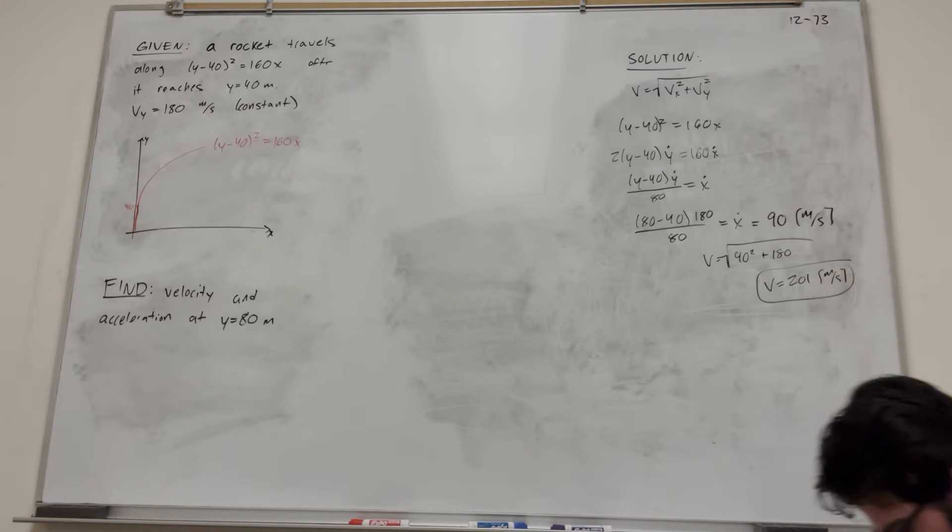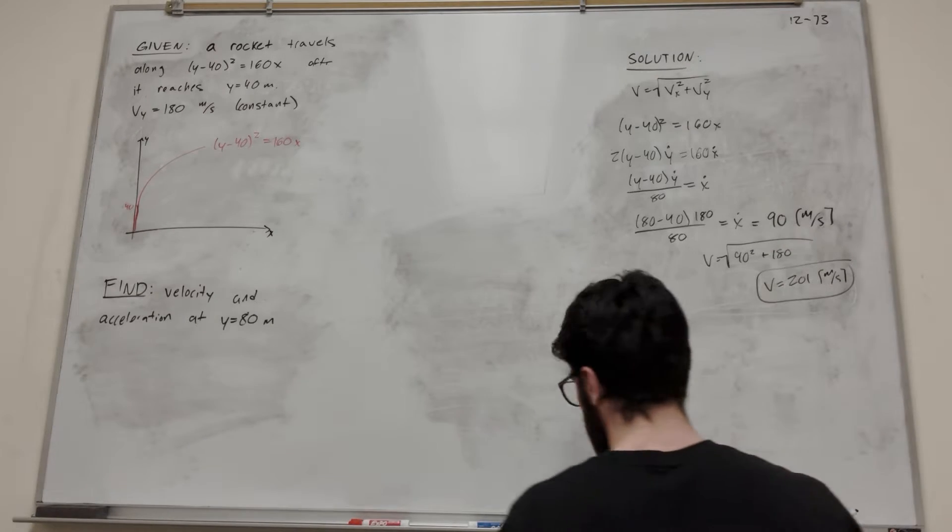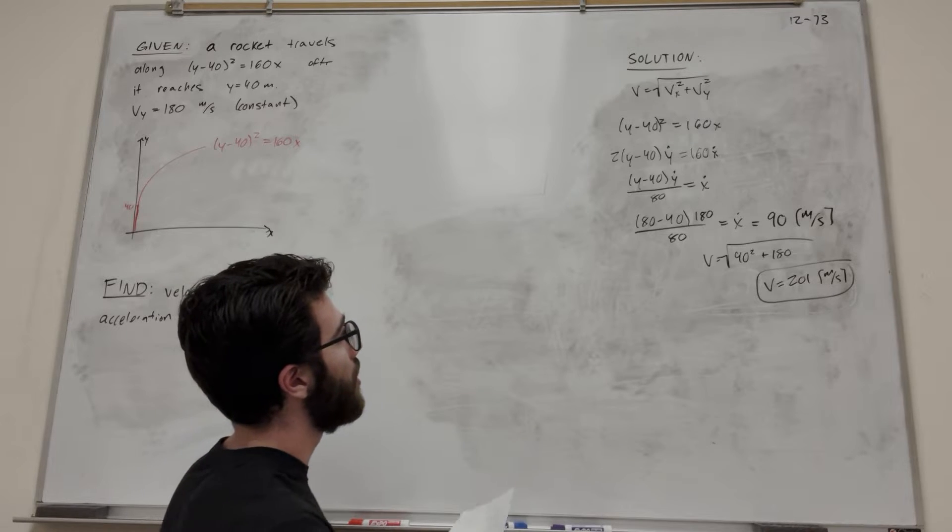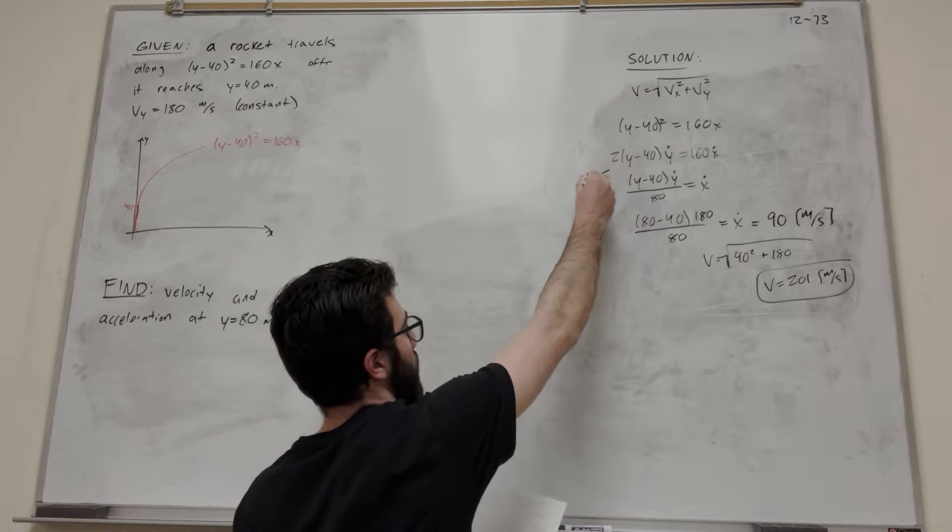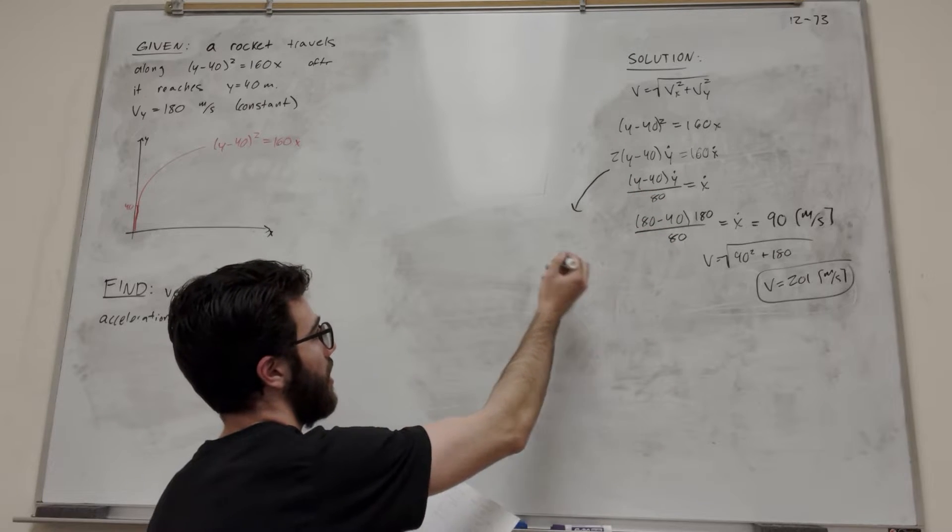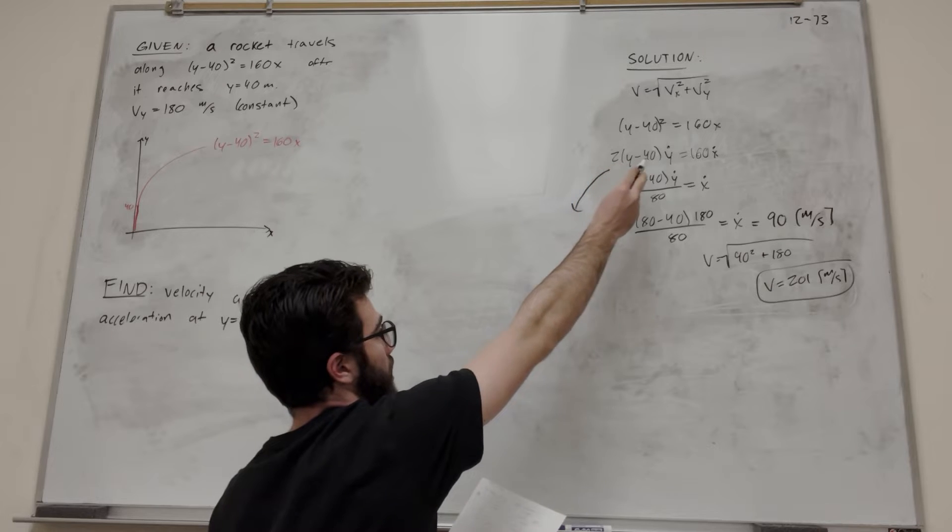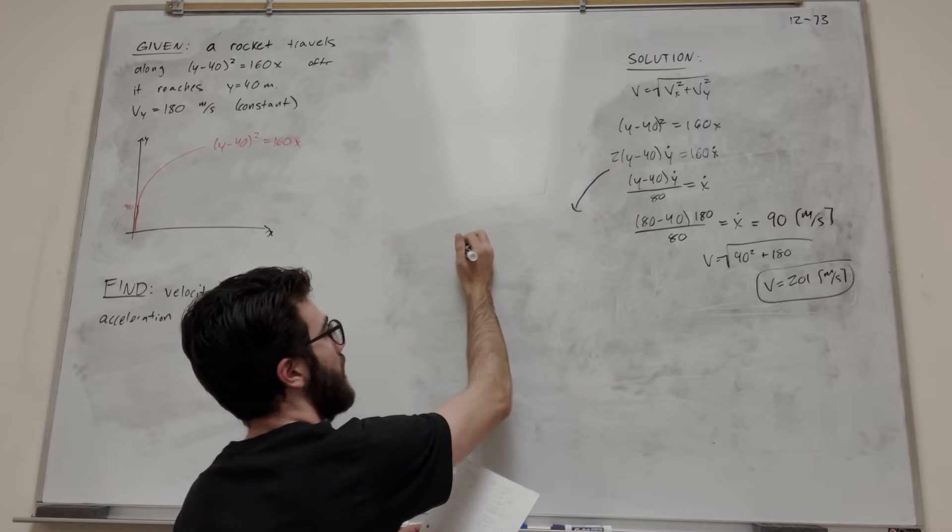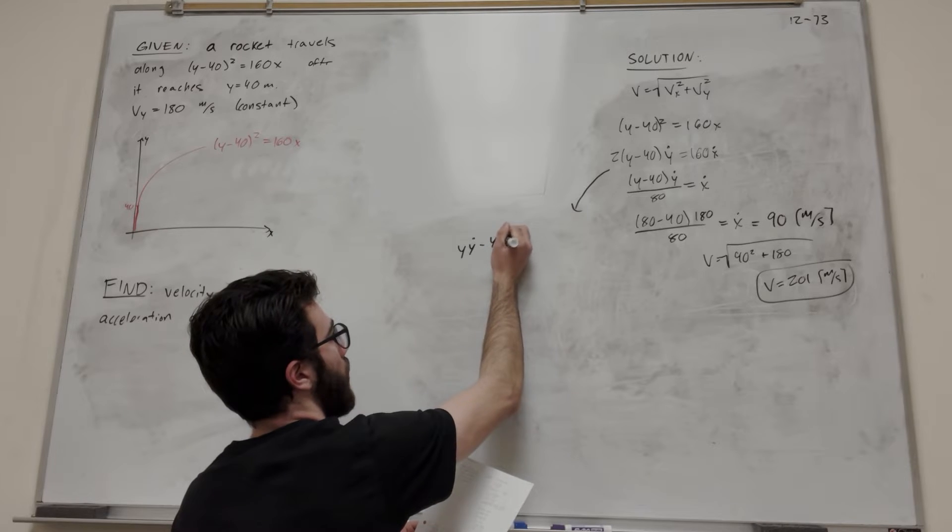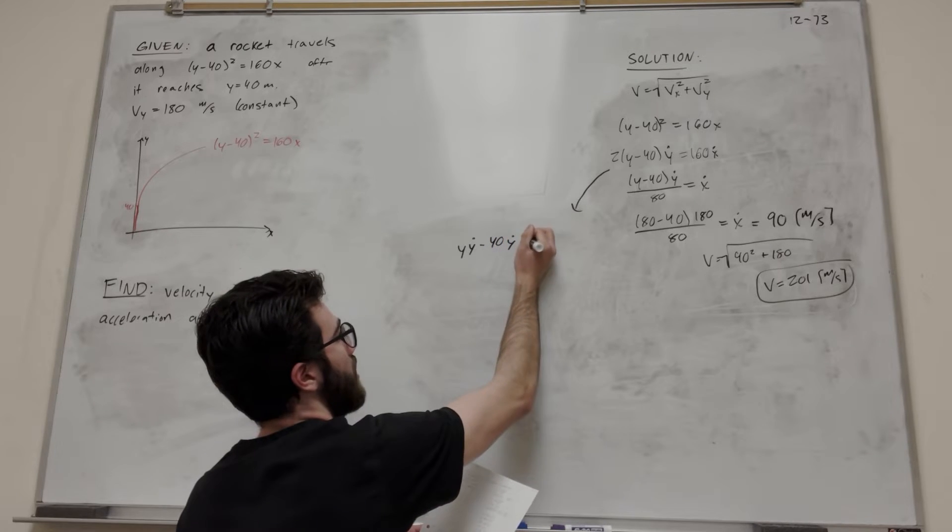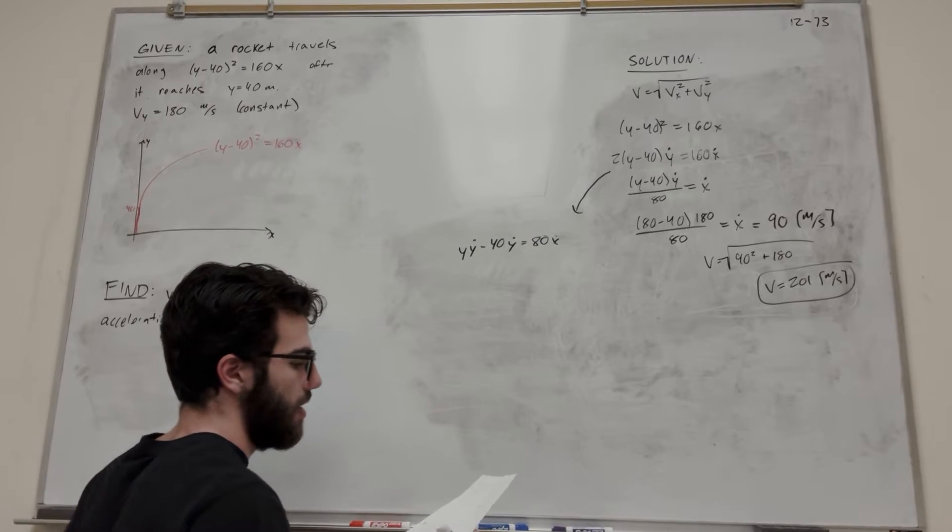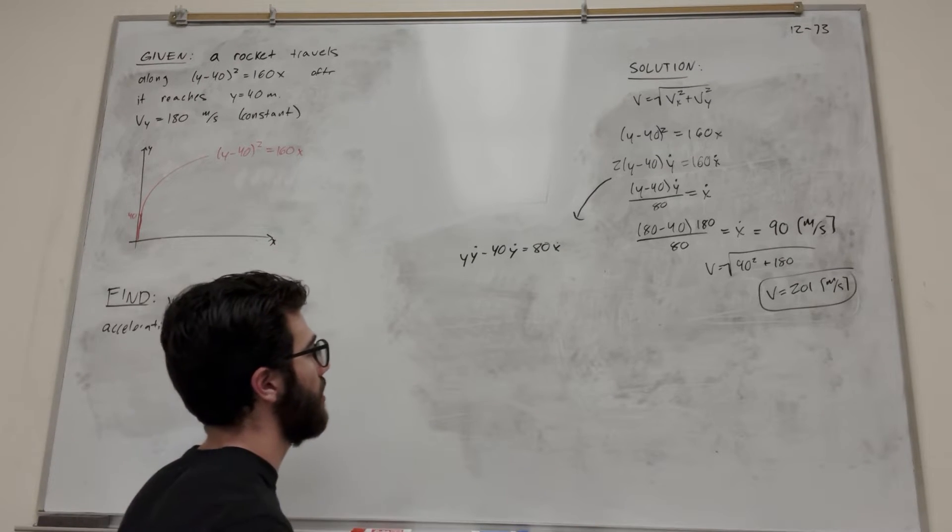Let's find acceleration now. How are we going to do this? Let's distribute. We're going to start here because this is going to be a little easier to take the derivative. Let's expand out everything. First, let's get rid of that 2, divide by 2 on both sides. We get y times y dot minus 40 y dot equals 80 x dot. Let's take the derivative again.